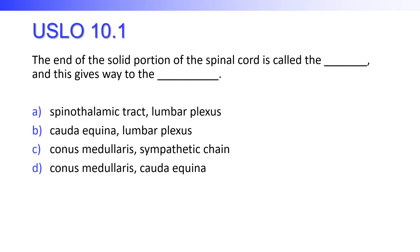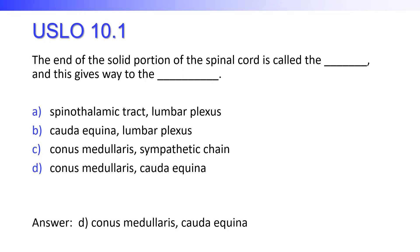The end of the solid portion of the spinal cord is called this, and gives way to this other thing. Is it the spinothalamic tract, the cauda equina, or the conus medullaris? The solid part of that tip is called the conus medullaris, and it gives way to the cauda equina. So the conus medullaris is the solid portion that gives way to the strands of the cauda equina.